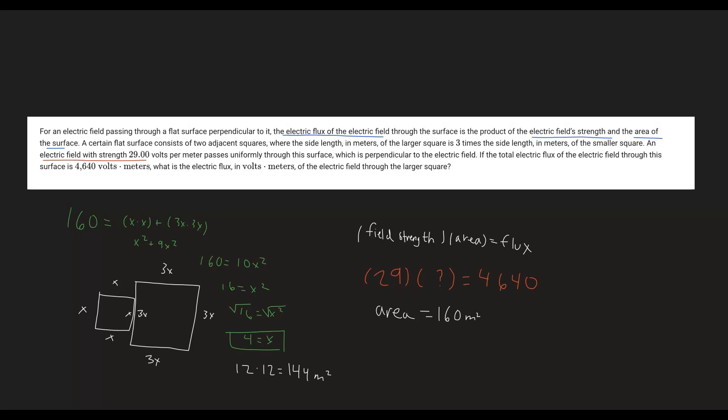Now we have the area of this larger square. Because of the relationship up here, the total electric flux is the product of the field strength, which we know is constant at 29 volts per meter, times the area of the surface. So all we do is 29 times 144, which gives us a final value of 4176 volts times meters.